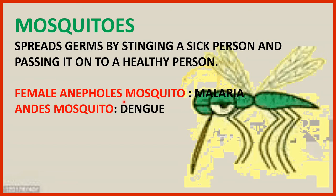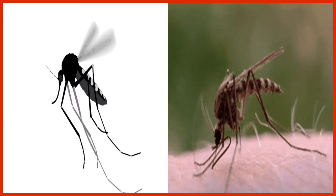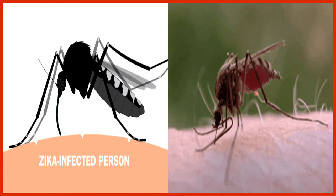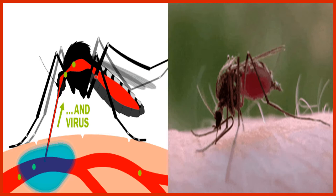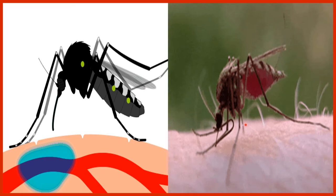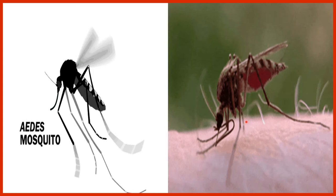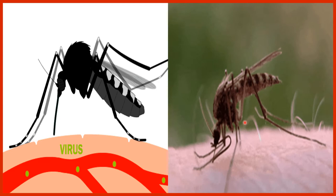The female Anopheles mosquito causes malaria and the Aedes mosquito causes dengue. You can observe here how the mosquito is sucking blood. Whenever the mosquito stings an unhealthy person, the virus gets transmitted into the mosquito, and when it then bites a healthy person the virus is injected into them. So we should keep our surroundings clean to prevent mosquitoes from breeding.